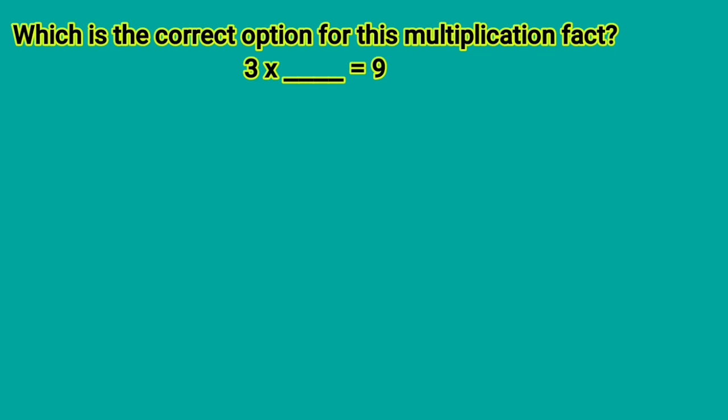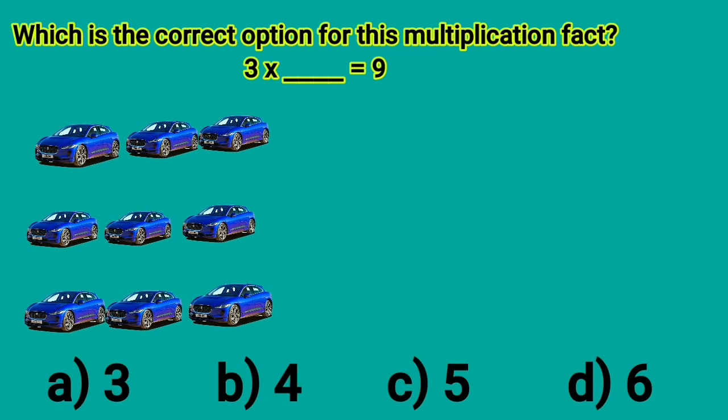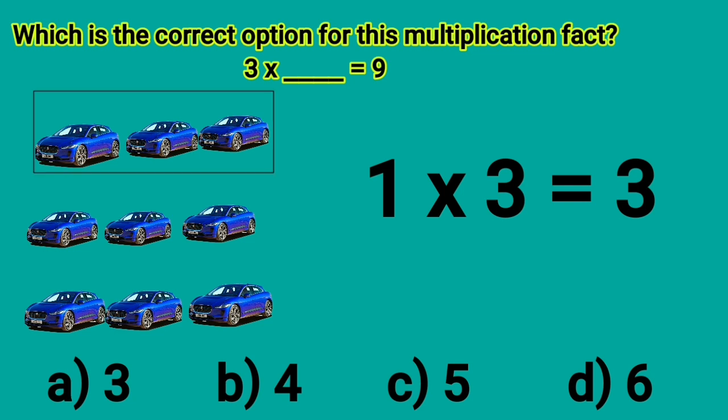Which is the correct option for this multiplication fact? 3 multiplied dash is equal to 9. Here we have 9 cars. Let's group these cars. 1 group of 3 cars. 1 group of 3 cars is equal to 1 times 3, is equal to 1 multiplied by 3 is equal to 3. Yes, 1 multiplied by 3 is equal to 3.